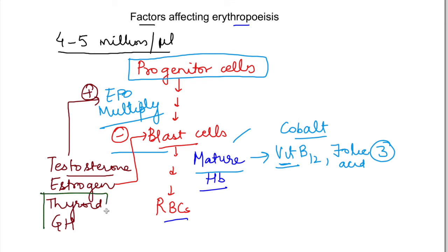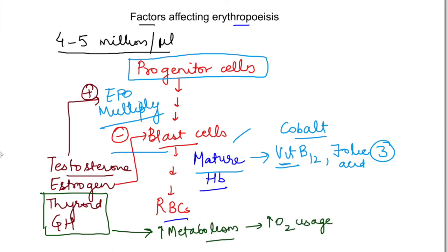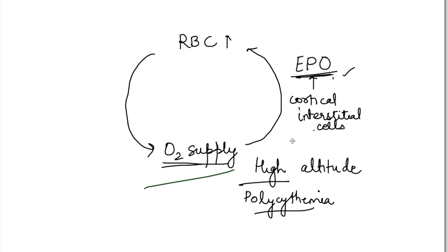The remaining hormones — thyroid and growth hormone — basically increase metabolic activity in the body. When metabolism increases, more oxygen is used, which activates the oxygen-sensing cycle, leading to more erythropoietin and increased RBC production. So these two hormones also stimulate erythropoiesis. To summarize: estrogen inhibits erythropoiesis, while testosterone, growth hormone, and thyroid hormone all increase erythropoiesis.